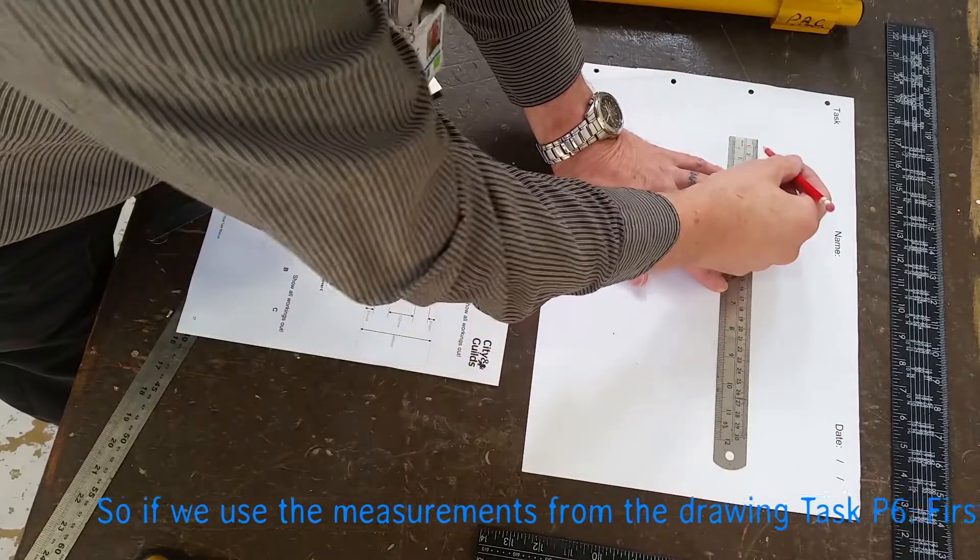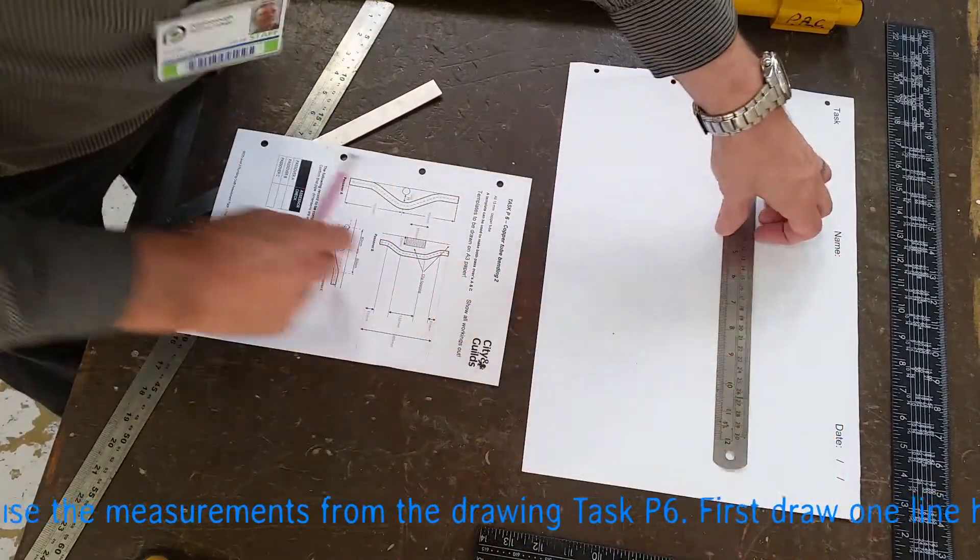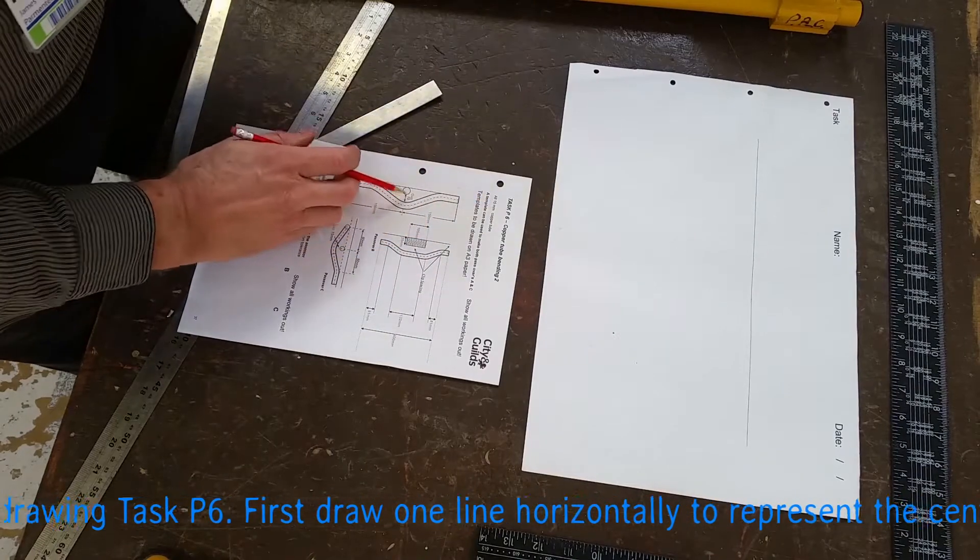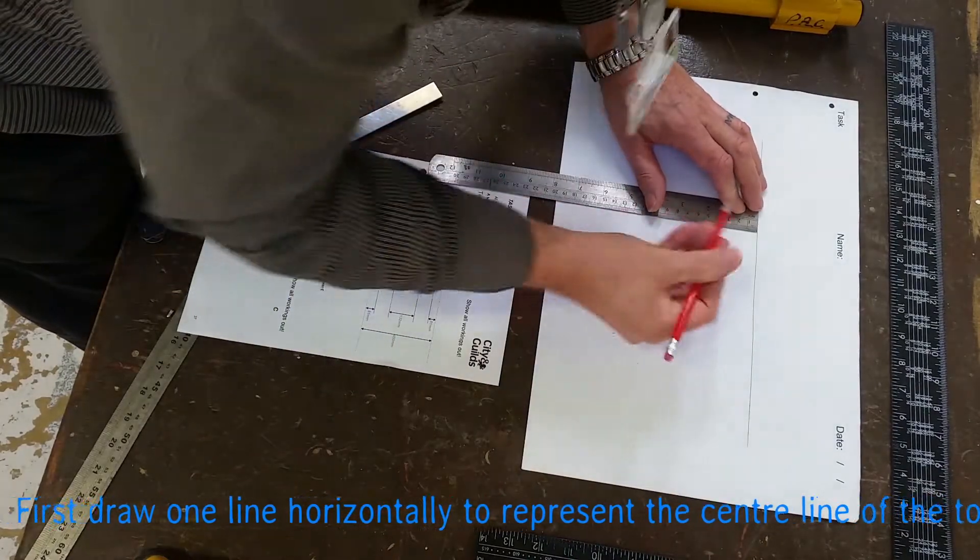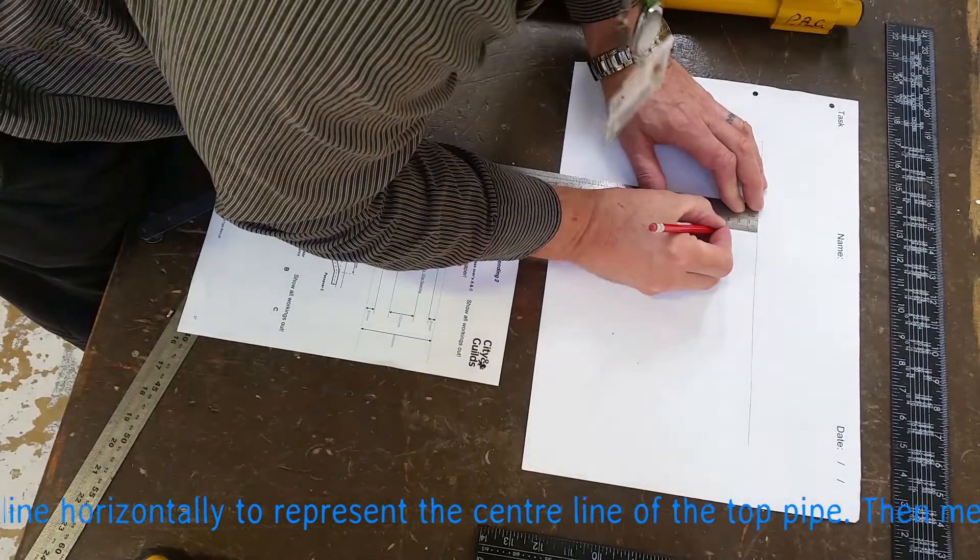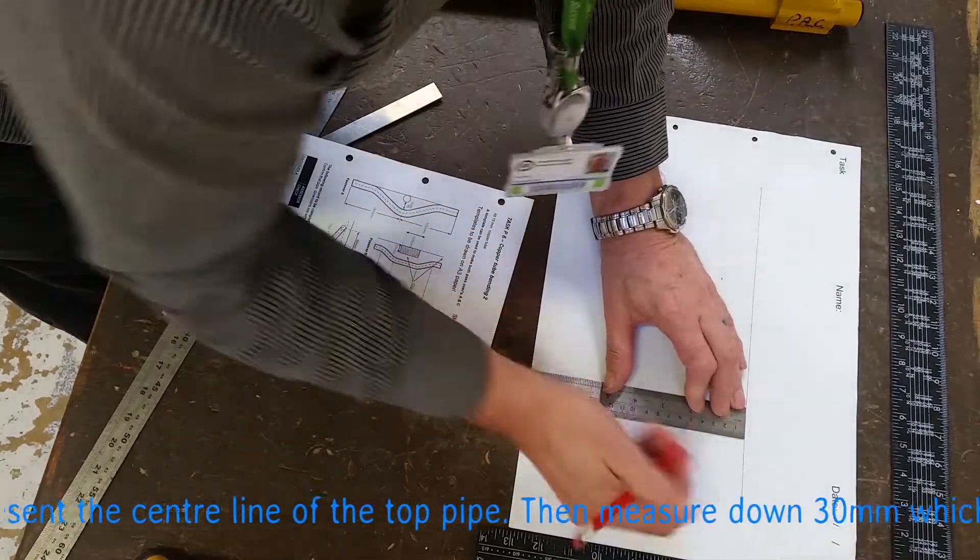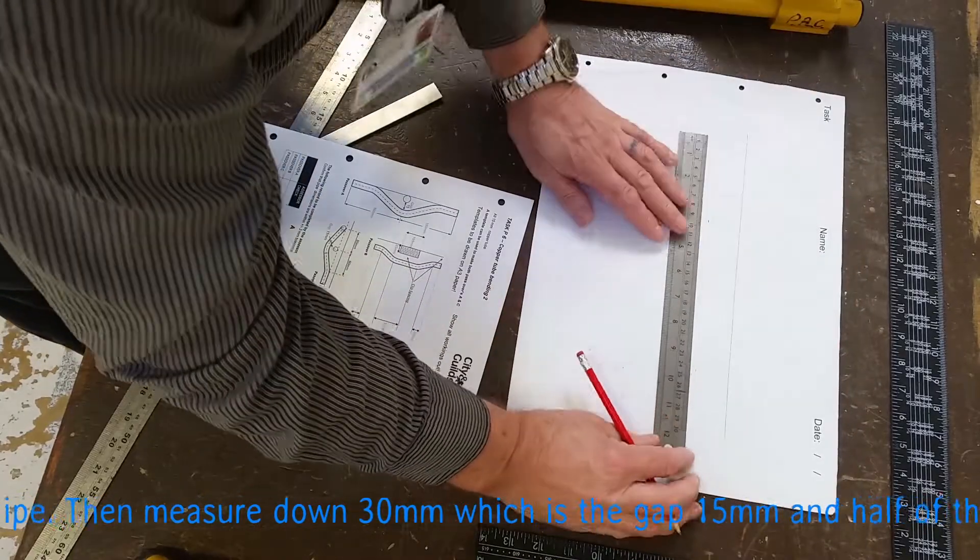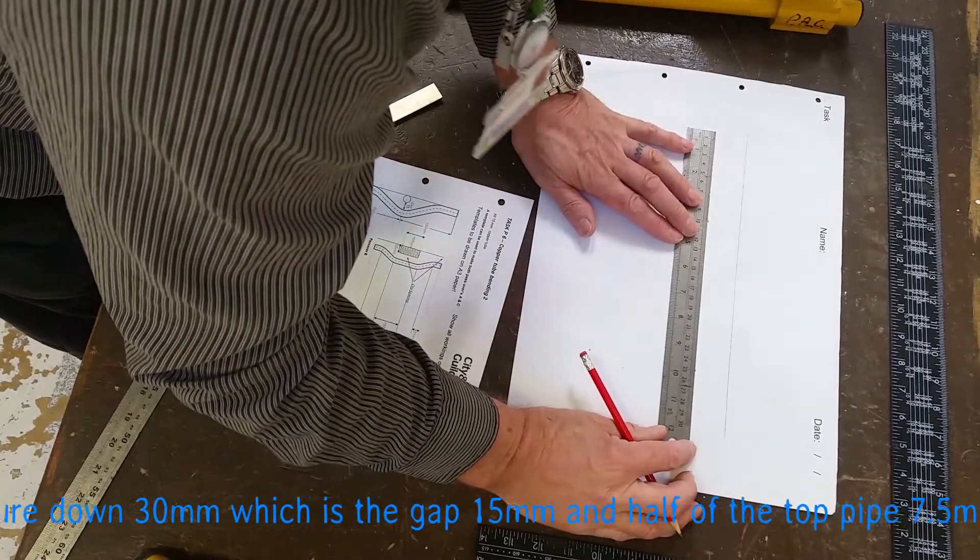Start off by drawing a line which will represent the top bend of our passover bend. Then we've got to measure down 30 because we've got a 15 gap, and we've got half of 15 and half of 15 to get to the center of each pipe. So that adds up to 30. Measure down 30. So we'll end up with two parallel lines 30 apart.